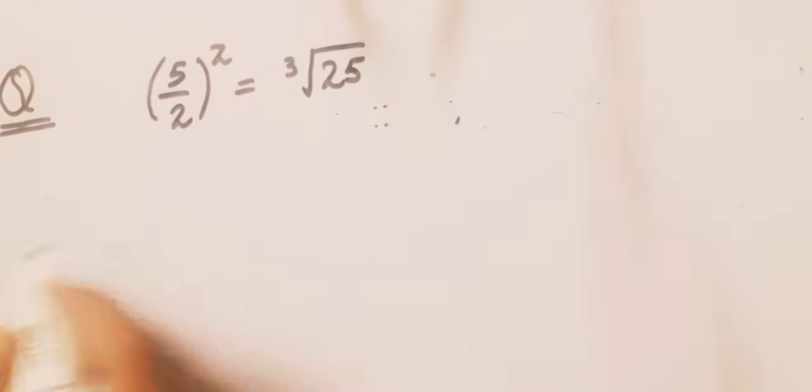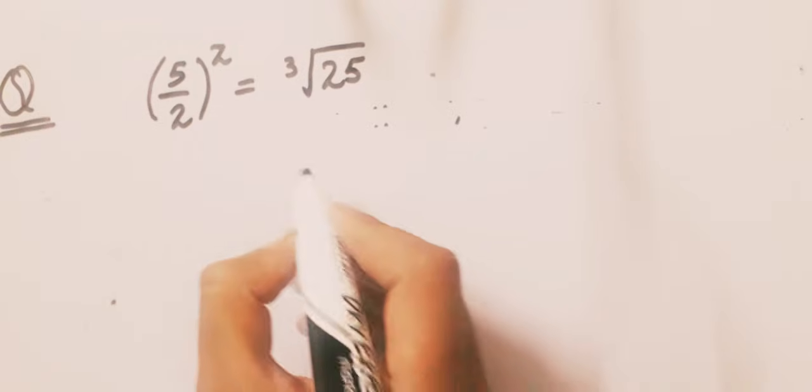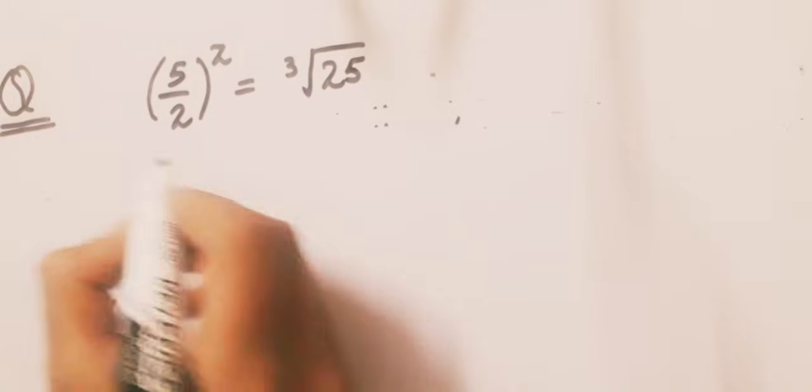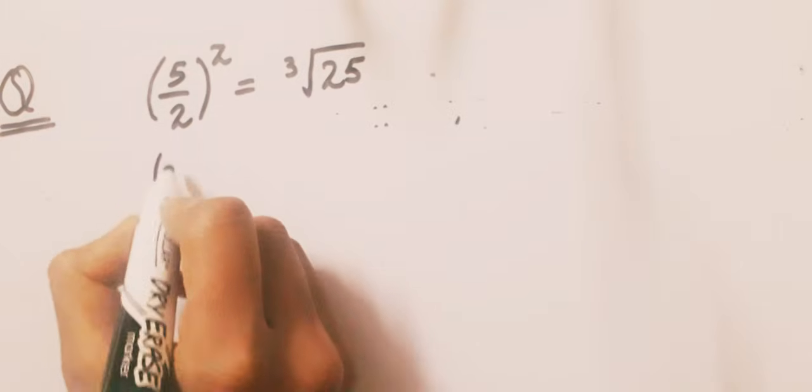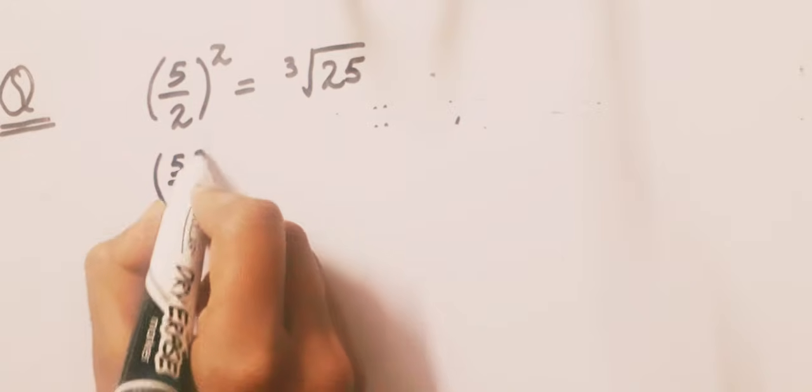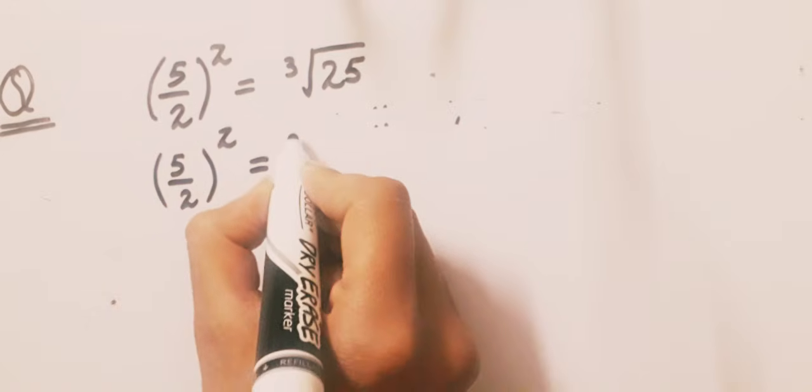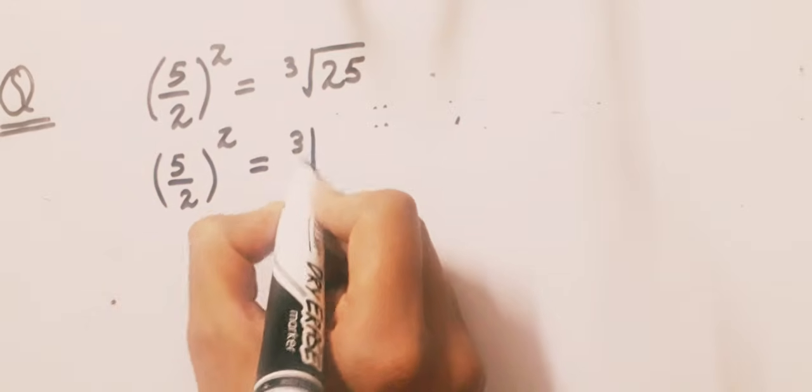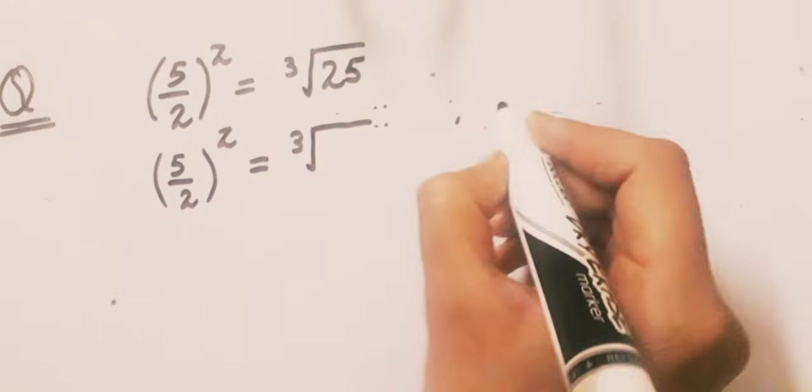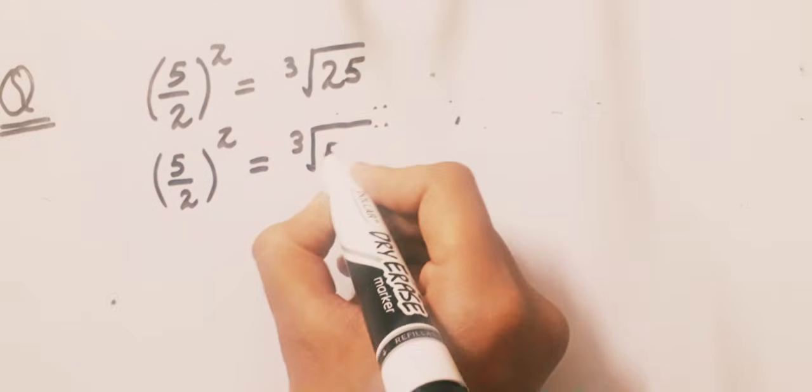Now we will start solving this question in a very easy way. (5/2)^z equals the cube root of 25. We know that 25 equals 5 squared.